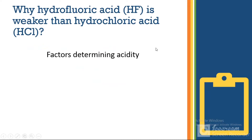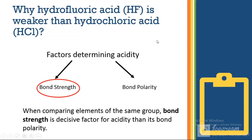The two factors to determine acidity are bond strength and bond polarity. When comparing the acidity of two elements belonging to the same group of the periodic table — both being halogens — bond strength is the more decisive factor. We will use bond strength to compare the acidity between the two acids.